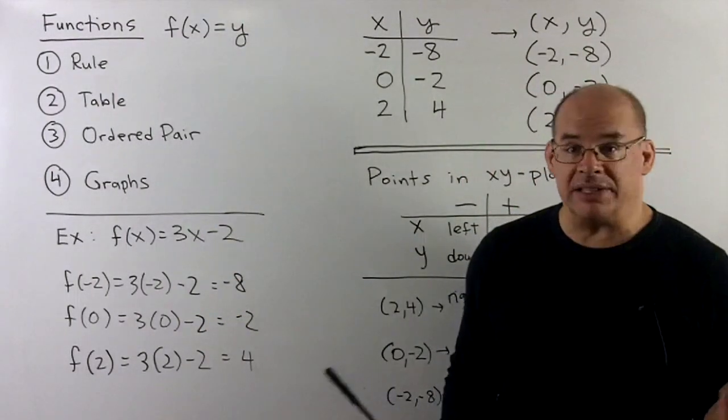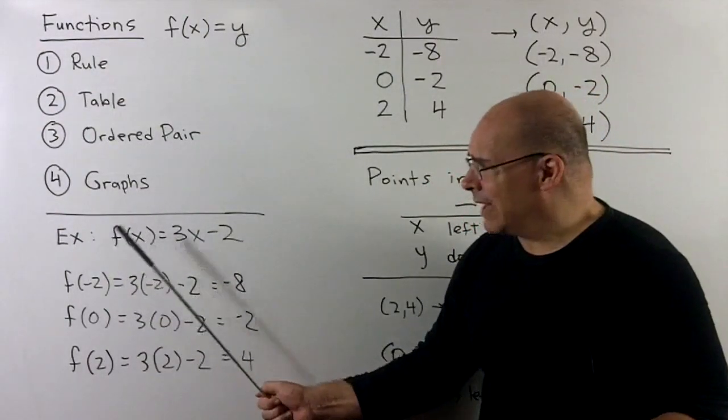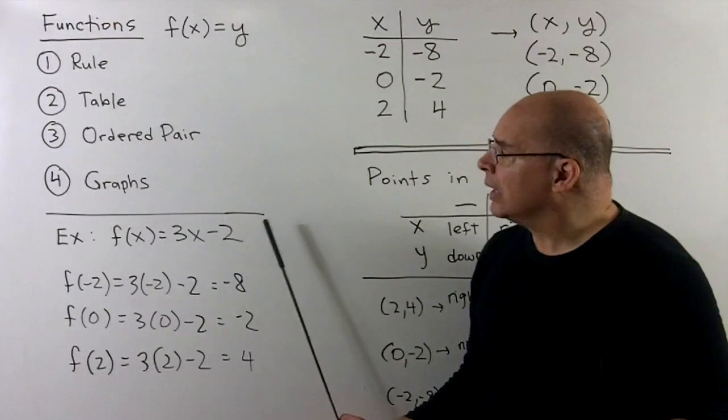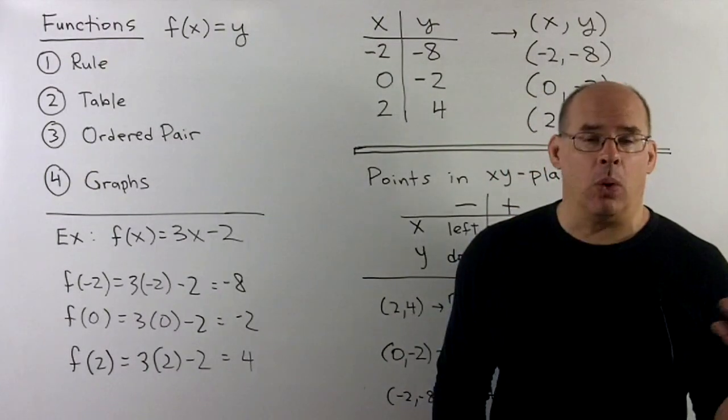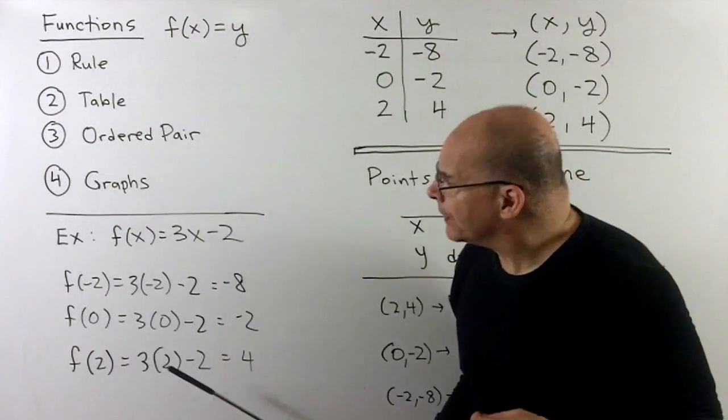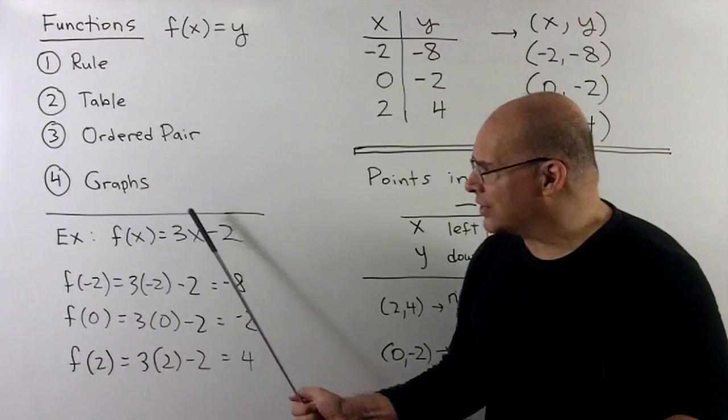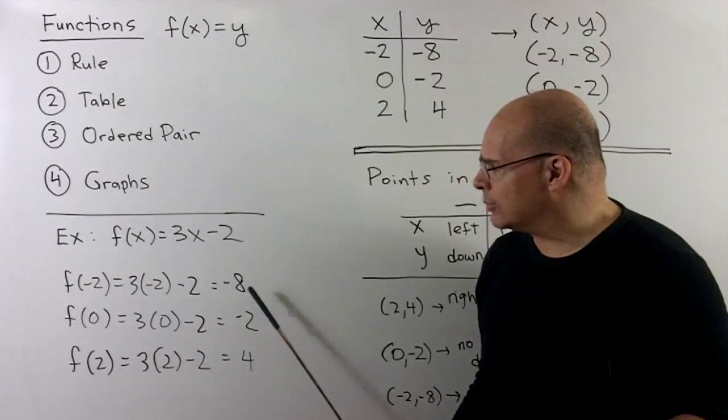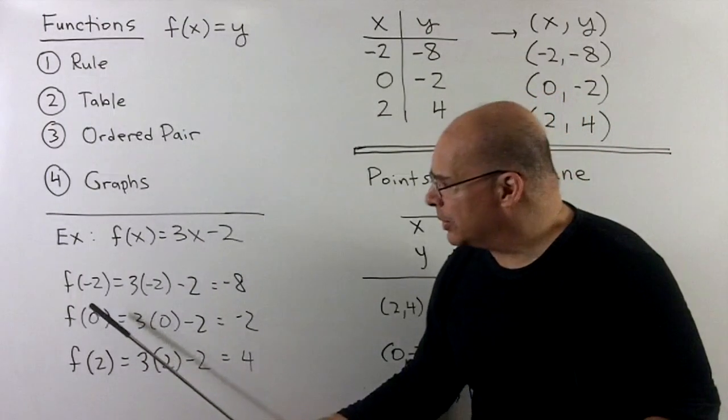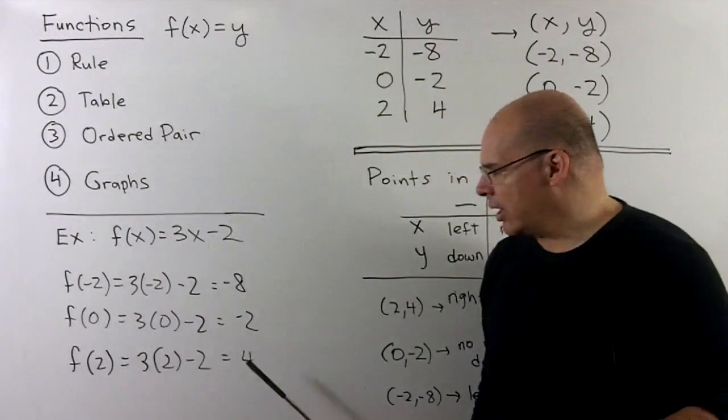Let's start with a basic example. Suppose I have the function given by the rule f(x) equal to 3x minus 2. I'll pick a few points just to get values of this, and then we'll eventually work up to the graph. If I put minus 2 in, wherever I see an x, I put a minus 2, so out comes y equal to minus 8. If we put 0 in, out comes minus 2. If I put 2 in, out comes 4.